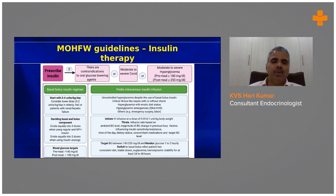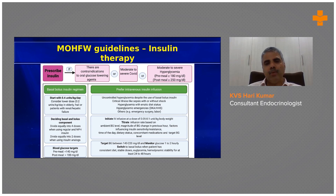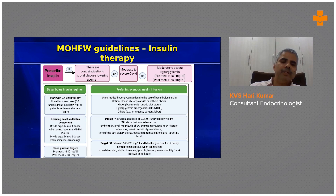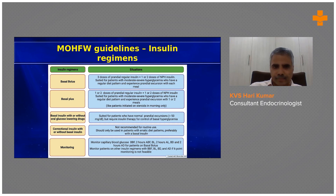Infusion is mainly used because very rarely is a person admitted to critical care who is taking regular meals. When someone is eating regular meals without vomiting, that is when you can consider pre-meal insulin or other regimes rather than infusion. The glucose target should be between 100 to 180, preferably pre-meal less than 140 and post-meal less than 180.